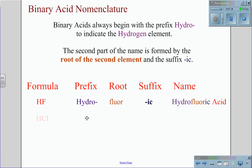For HCl, we again begin with the prefix hydro. The root is chlor from chlorine. The suffix is ic, giving us hydrochloric acid.